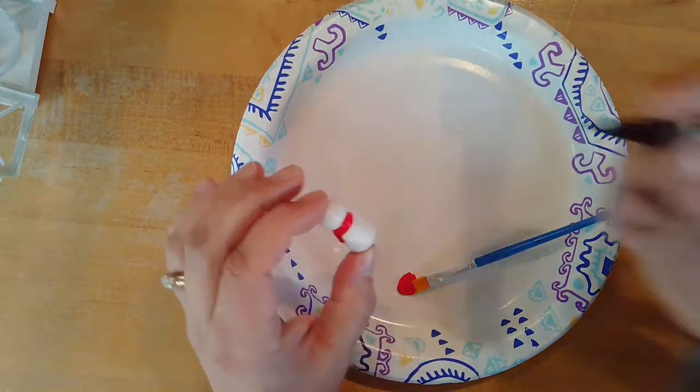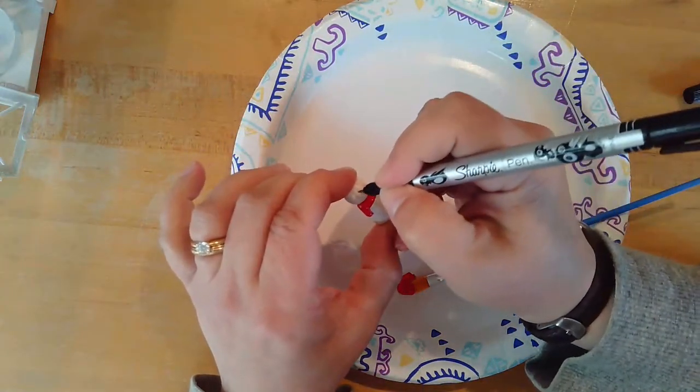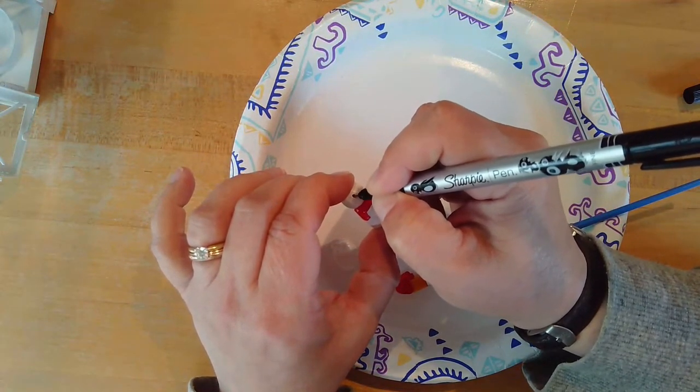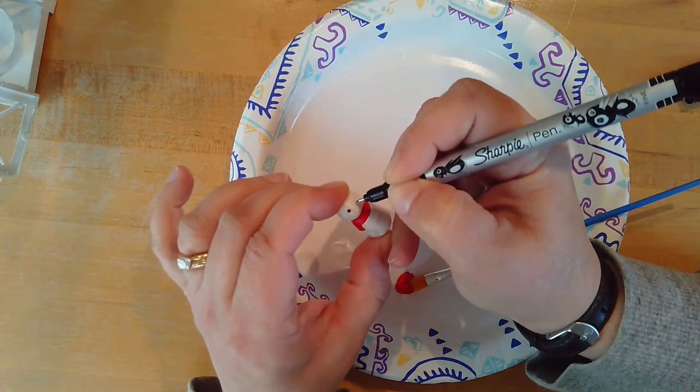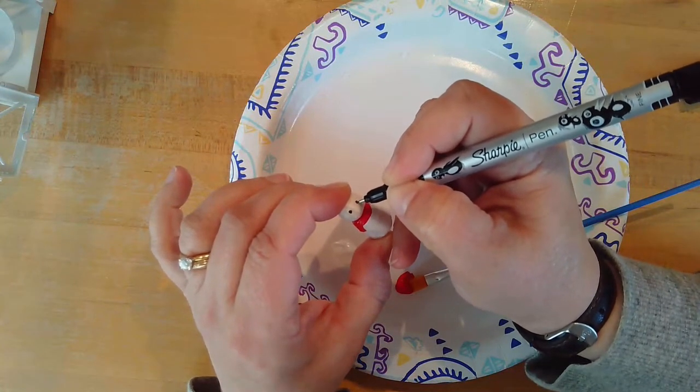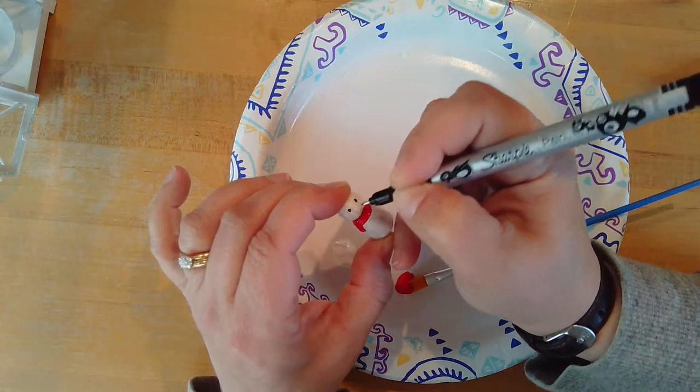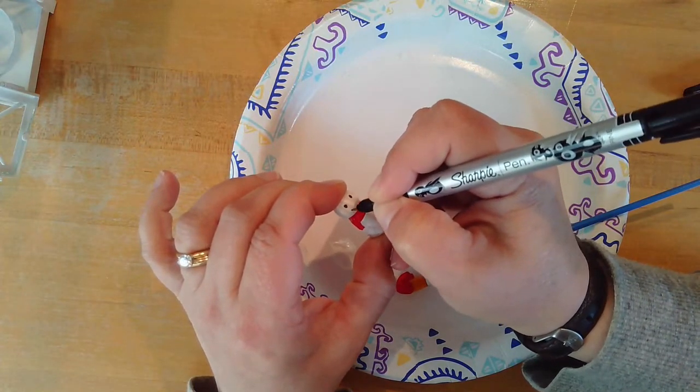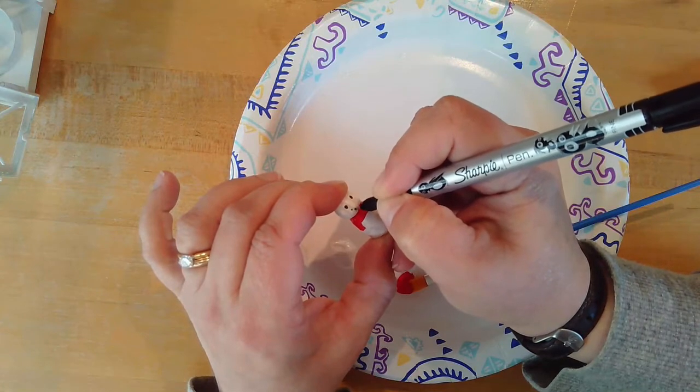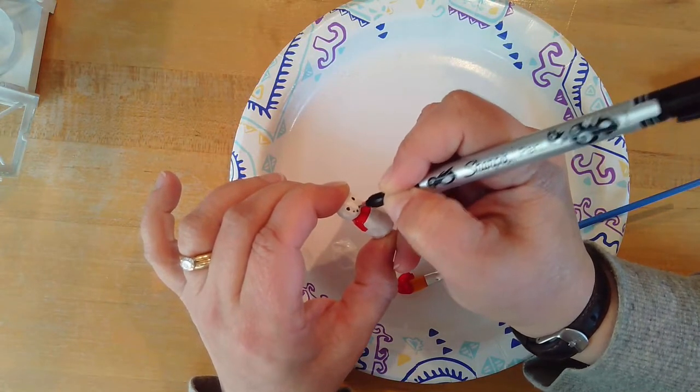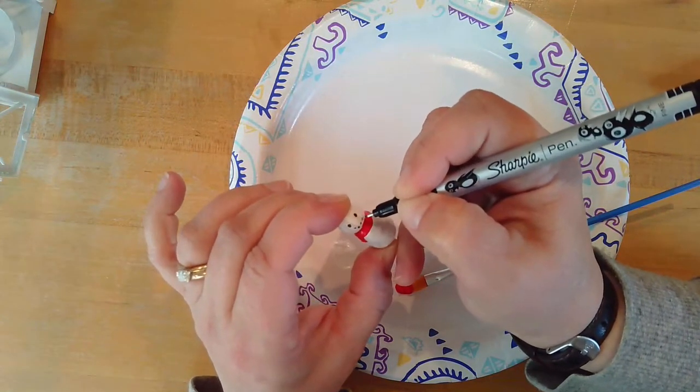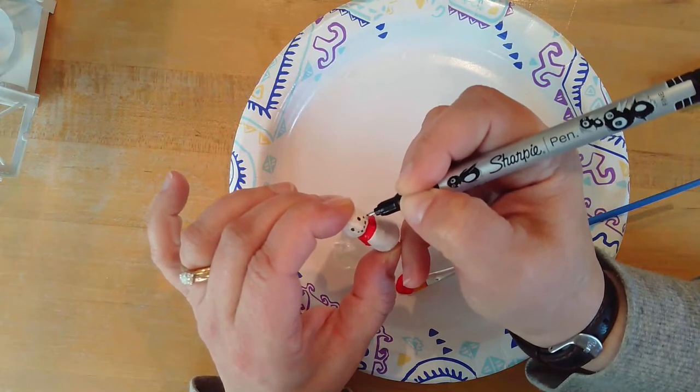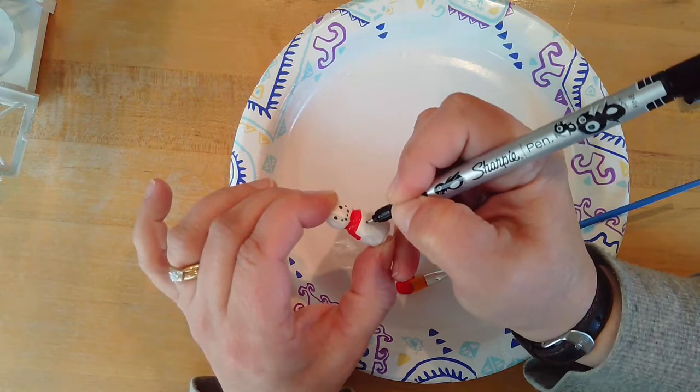Once your snowman's dry, you can use your black permanent marker. You'll have a different brand, but it'll be about the same. And you can draw your snowman's black button eyes, a smiley face. And this is entirely up to you, whether you want to do dots or do a whole smile. It's your snowman. I'm doing dots like I would with buttons. And a couple buttons down the front.